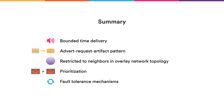To summarize the role of the peer-to-peer layer: it is responsible for providing bounded time delivery of artifacts in a subnet. It uses an advert-request-artifact pattern and overlay topologies to reduce bandwidth requirements. There is a prioritization API to client components to ensure highest priority artifacts are delivered first, and the design is fault-tolerant. Thank you very much for your attention.